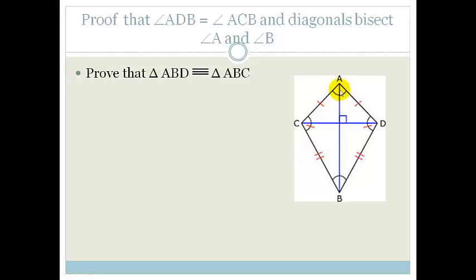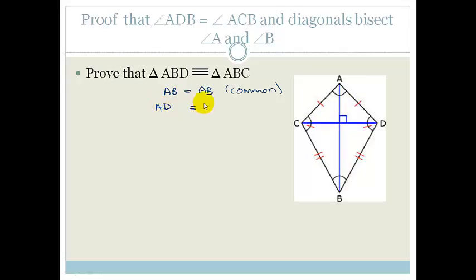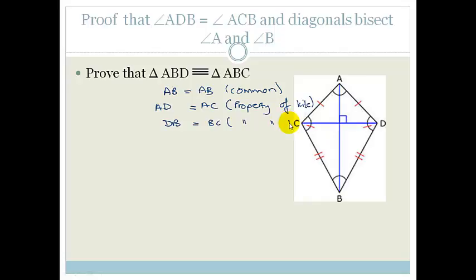Looking at triangle ABD and triangle ABC: AB equals AB because it's common. We also know that AC equals AD — because it is a property of a kite, this side has to be equal to this side. Similarly, since this is a kite, DB has to equal BC — because it's a property of a kite.